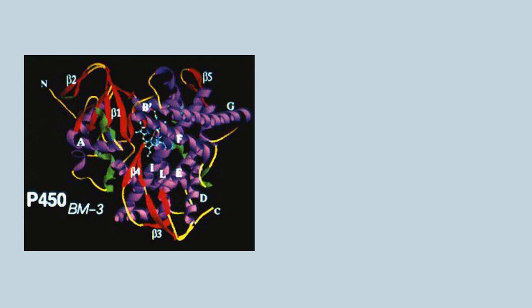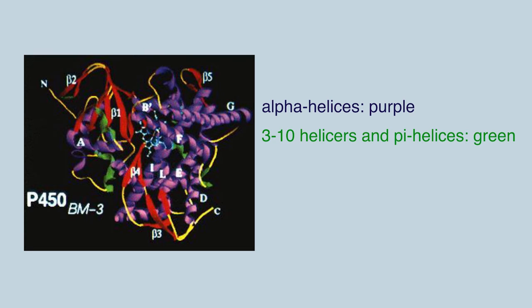The alpha helices are presented as purple coils, 3-10 helices and pi helices as green coils, beta strands as red arrows, and beta loops are represented as yellow tubes.